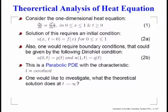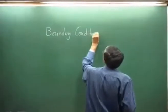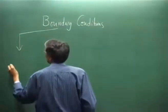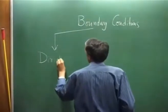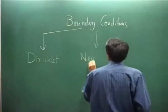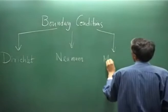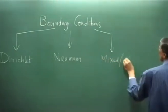However, those conditions could be time dependent. Boundary conditions that we usually talk about are classified into three categories: one is called the Dirichlet condition, then we have the Neumann condition, and the third is what is called the mixed or Robin's boundary condition.